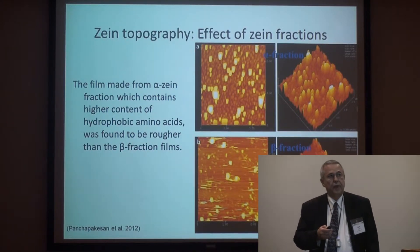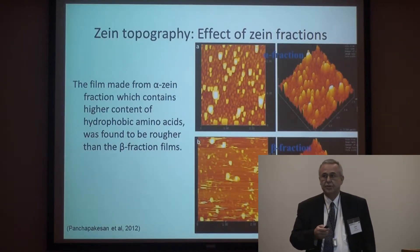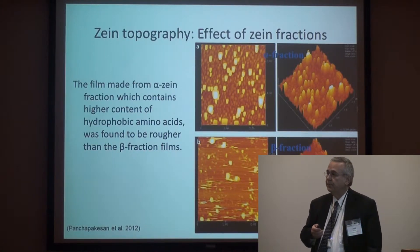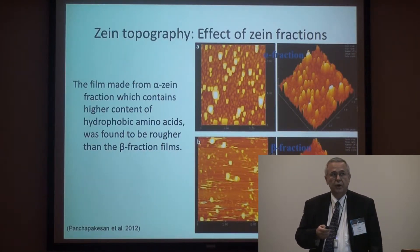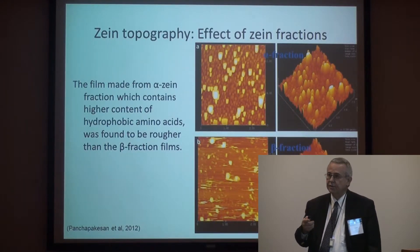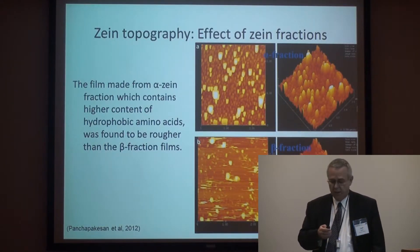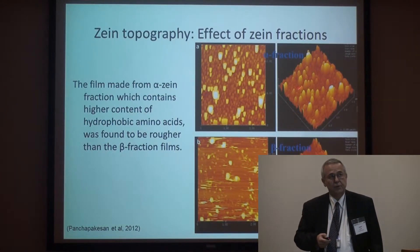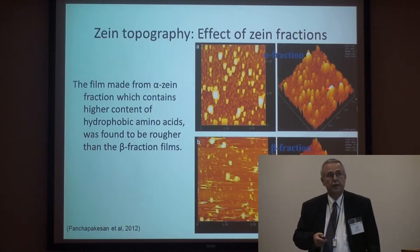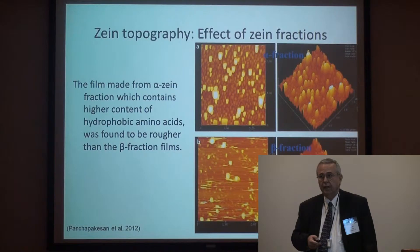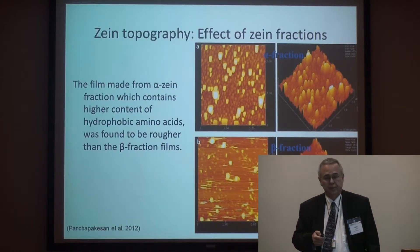Their topography changes essentially depending on what kinds of fractions we harvest from Zein. Zein is the low-molecular-weight protein of corn. You can see here the surface topography that one gets with alpha Zein, but the surface topography with the beta fraction of Zein is dramatically different.